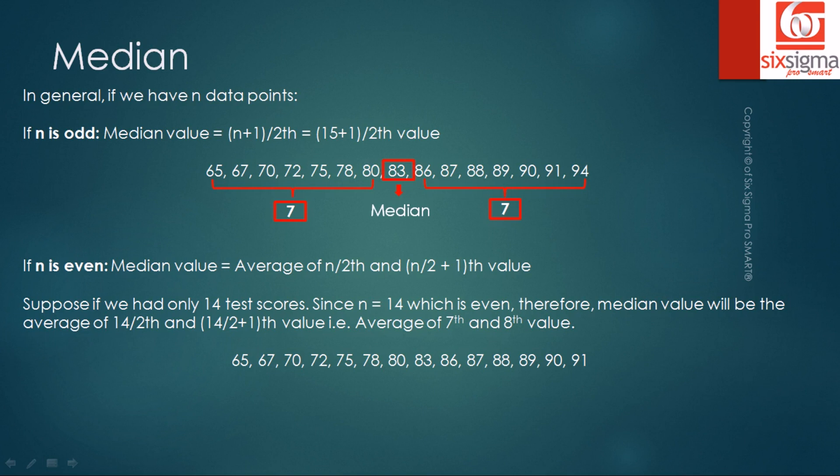Similarly, if n is even, then the median is the average of n by 2th and n by 2 plus 1 value. Let's say if we had 14 test scores instead of 15, which is an even number, the median would have been calculated as an average of 14 by 2, that is 7th, and 14 by 2 plus 1, that is 8th. So it would have been the average of 7th and 8th value.